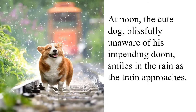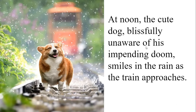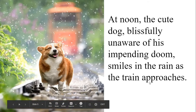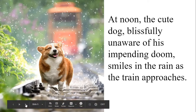We can go even more complex: 'At noon, the cute dog, blissfully unaware of his impending doom, smiles in the rain as the train approaches.' Here I've got a prepositional phrase telling when; 'blissfully unaware of his impending doom,' a modifying phrase acting like an adjective describing the dog; 'in the rain,' a prepositional phrase telling where; and 'as the train approaches,' a dependent clause — like a mini sentence tucked inside — telling us when the smiling is happening.